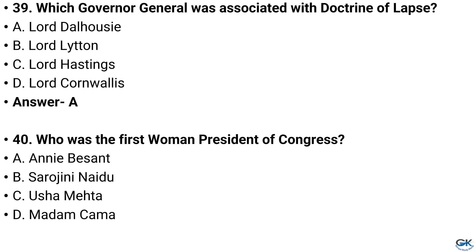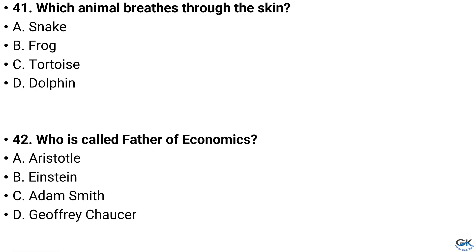Question number 40. Who was the first woman President of Congress? Option A: Annie Besant, Option B: Sarojini Naidu, Option C: Usha Mehta, Option D: Madam Cama. And the answer is Option A: Annie Besant.